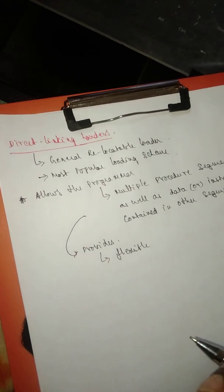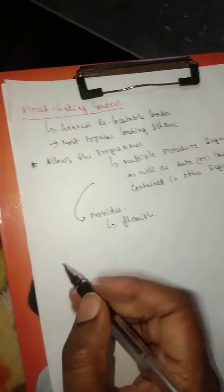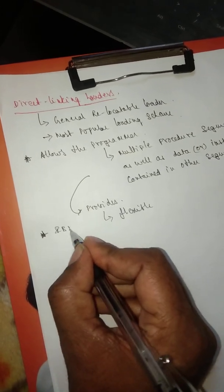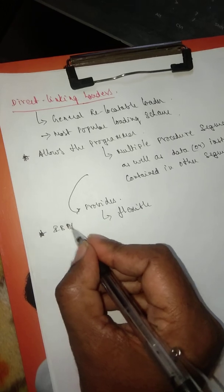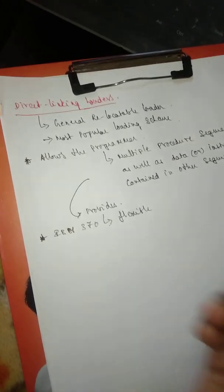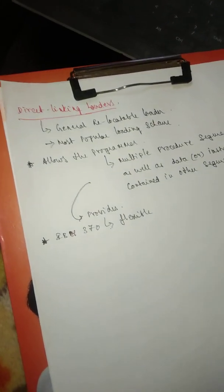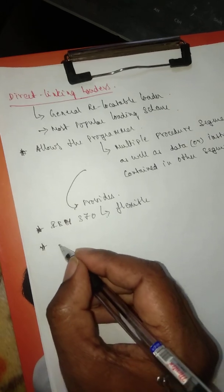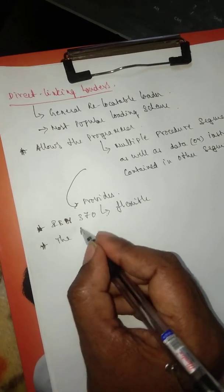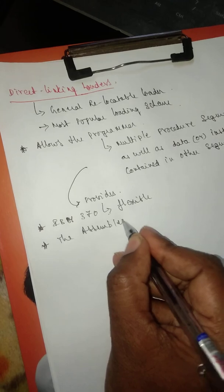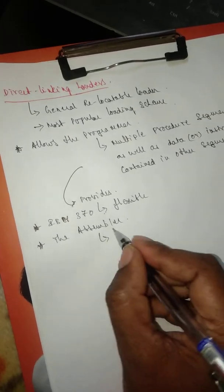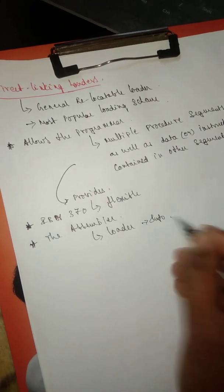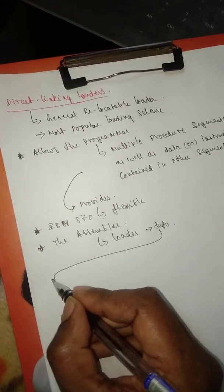So this is the major plus point, and this kind of scheme is seen in IBM 370. In addition to that, the assembler must provide the loader with information. Now what are the information that it has to give?